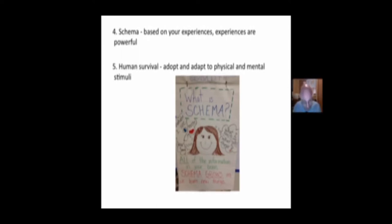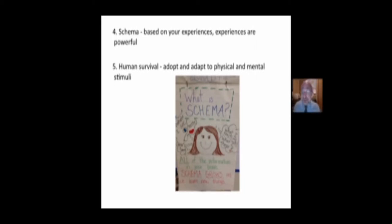Your schema — based on reading instruction, learning, or whatever — is based on your personal experience. This is why change is so often hard in an educational context: we have these personal experiences. However, human survival is based on our ability to adopt and adapt schema — to adopt and adapt to physical and mental stimuli. When we act upon the world, the world acts upon us, meaning it changes the structure of our brain in terms of new neural pathways.